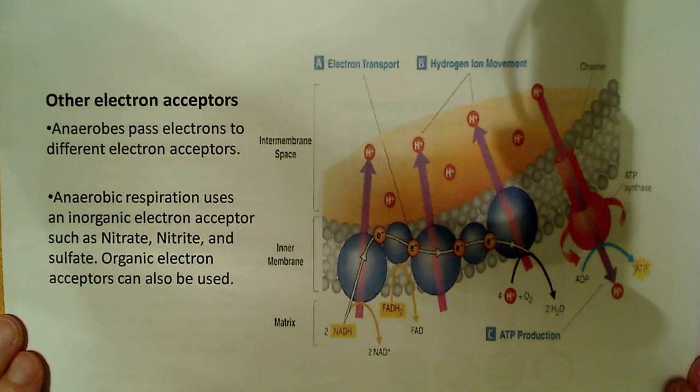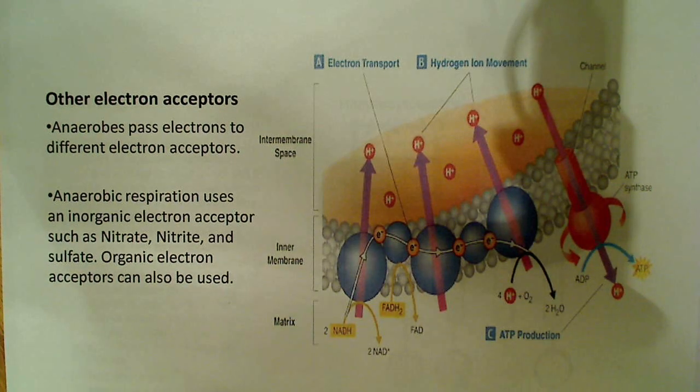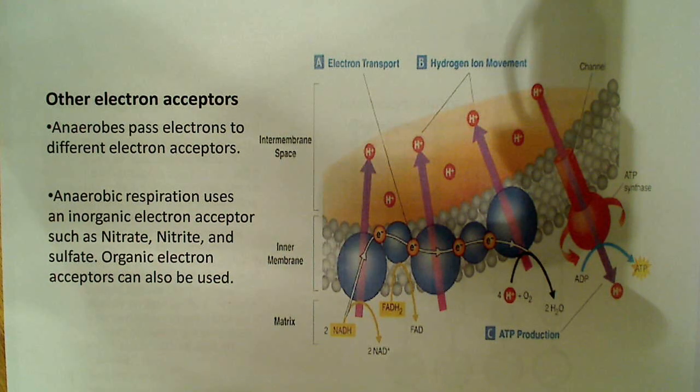In keeping with the theme of anaerobic respiration, we have other electron acceptors. In the case of anaerobic electron receptors, the electron receptors are something different. The anaerobes use different electron acceptors. In many cases, that's inorganic electron acceptors such as nitrate, nitrite, or sulfate.